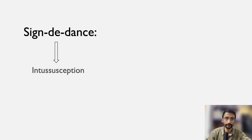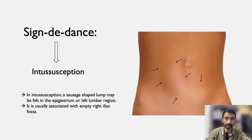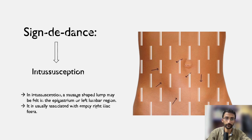Signe de danse is seen in case of intussusception. In intussusception, a sausage-shaped lump may be felt in the epigastrium or left lumbar region, and it is usually associated with an empty right iliac fossa.